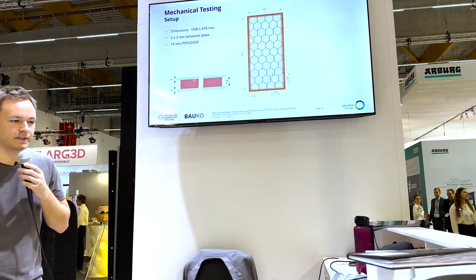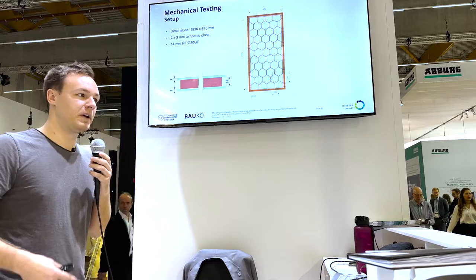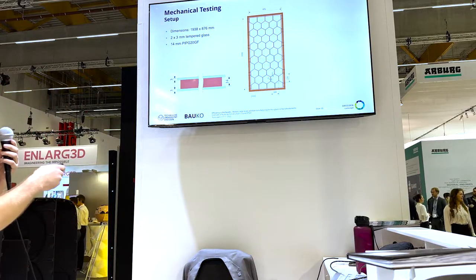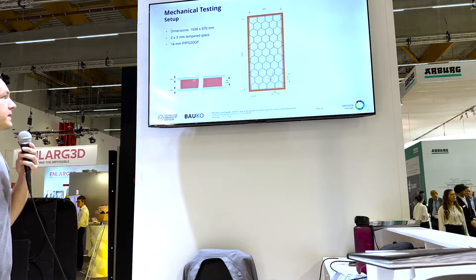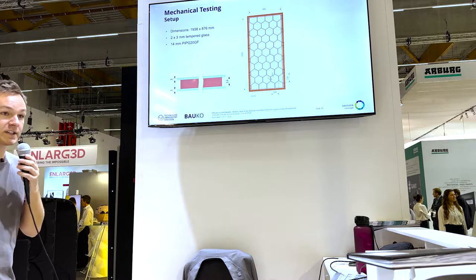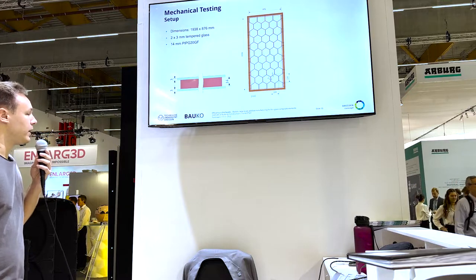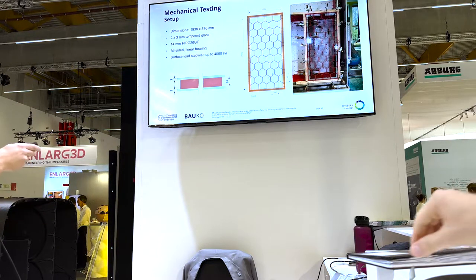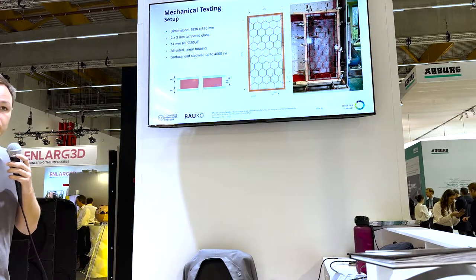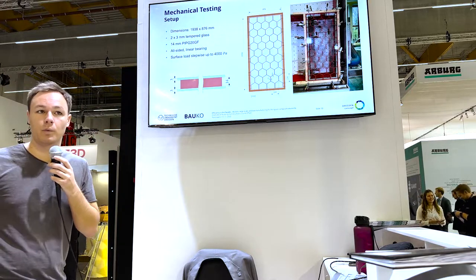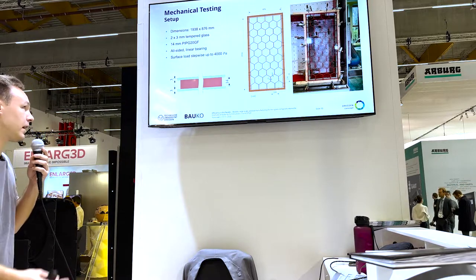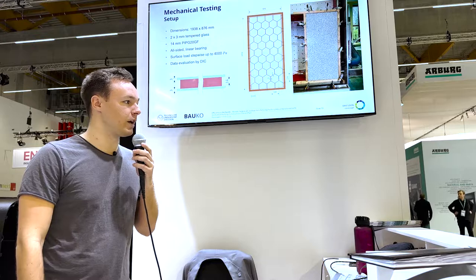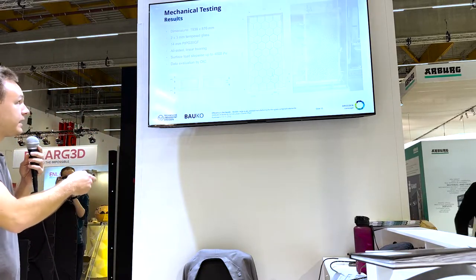Let's look into some mechanical testing, because we want to use this in the facade and be very efficient — saving material and glass — so we need to know what we can actually achieve with this setup. This is our test setup: an almost 2 by 1 meter sized honeycomb panel with a 14 mm core and 3 mm glass on each side, which is quite thick and we want to go slimmer. The picture on the right is a facade test setup at our institute where we can simulate wind pressure. We load the element with wind pressure or suction, and for measurement we use a DIC system — a digital image correlation system.